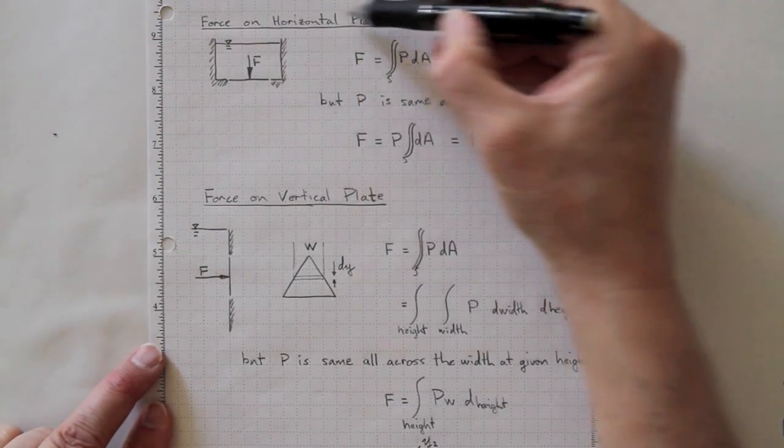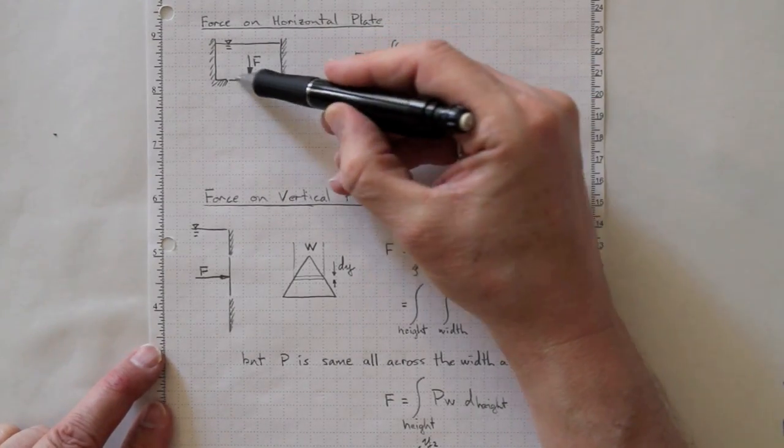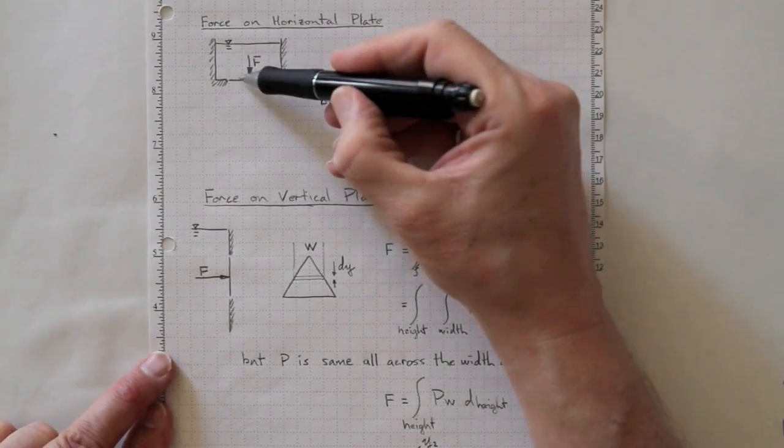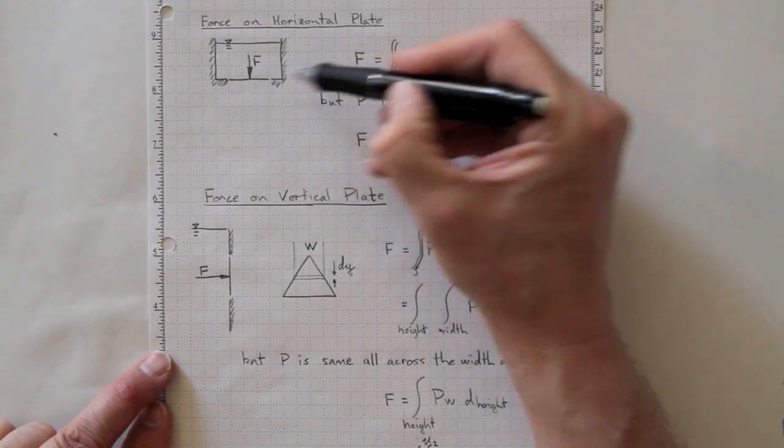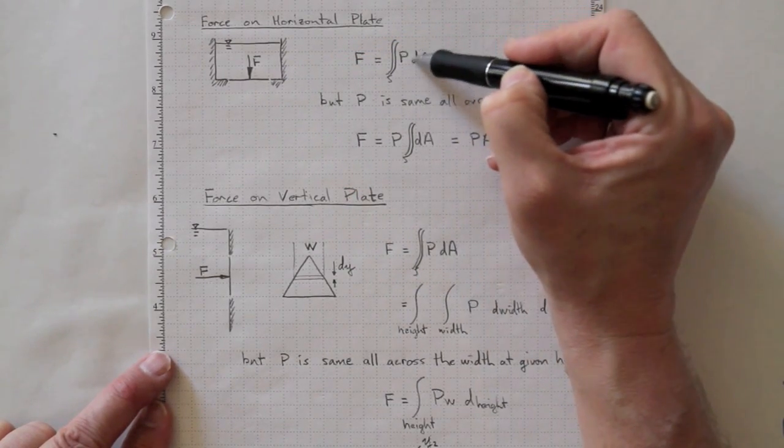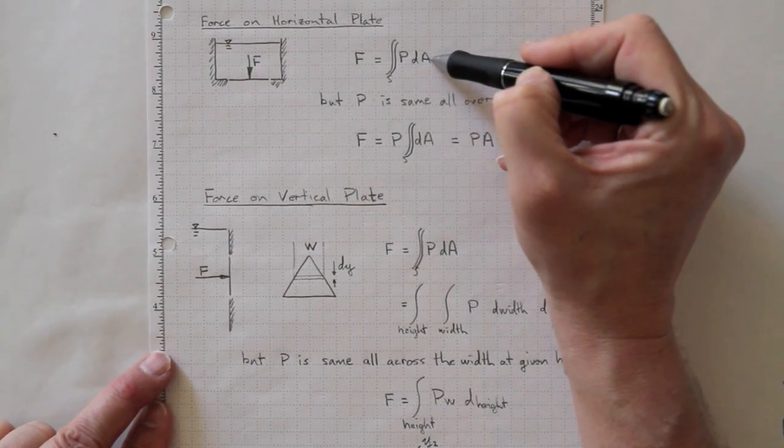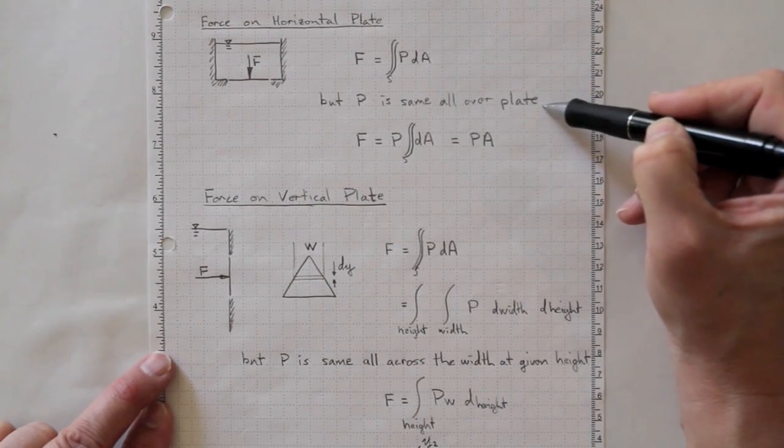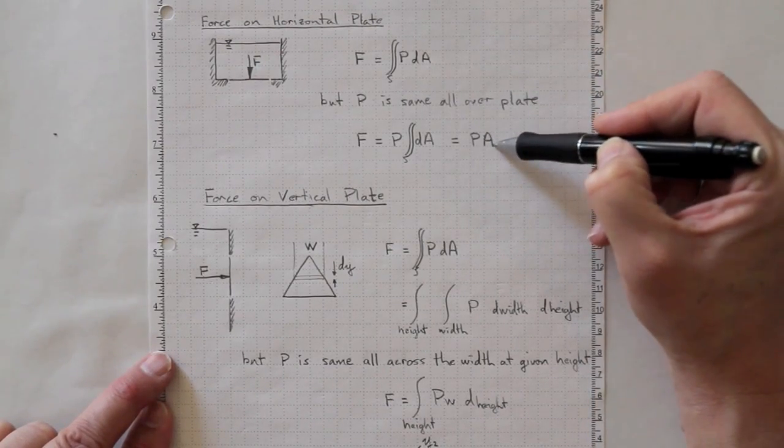If you're looking at the force acting on a horizontal plate in a static reservoir, the pressure is going to be constant over the entire plate. So the total force is the integral over the surface, P dA, but the pressure is the same all over the plate, so it's just the pressure times the area.